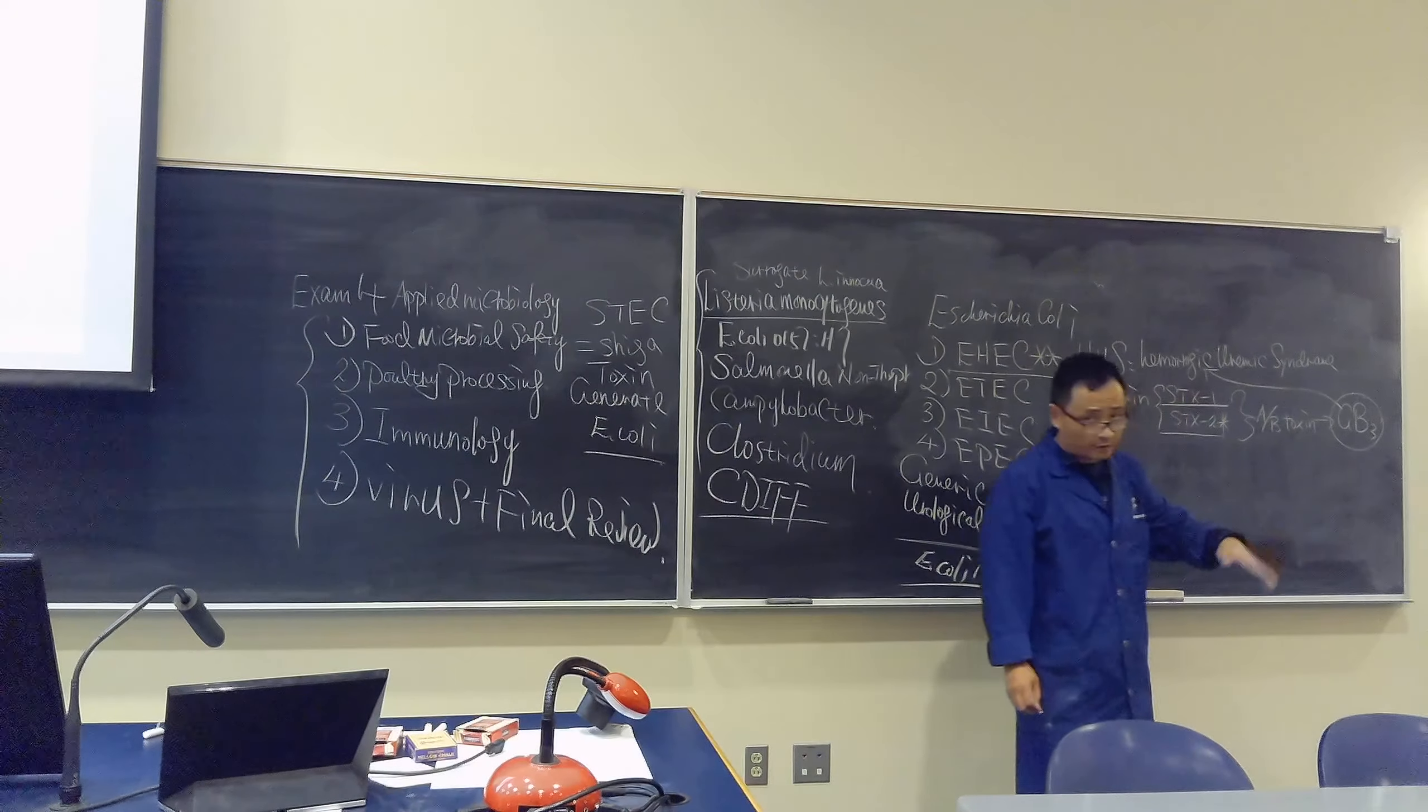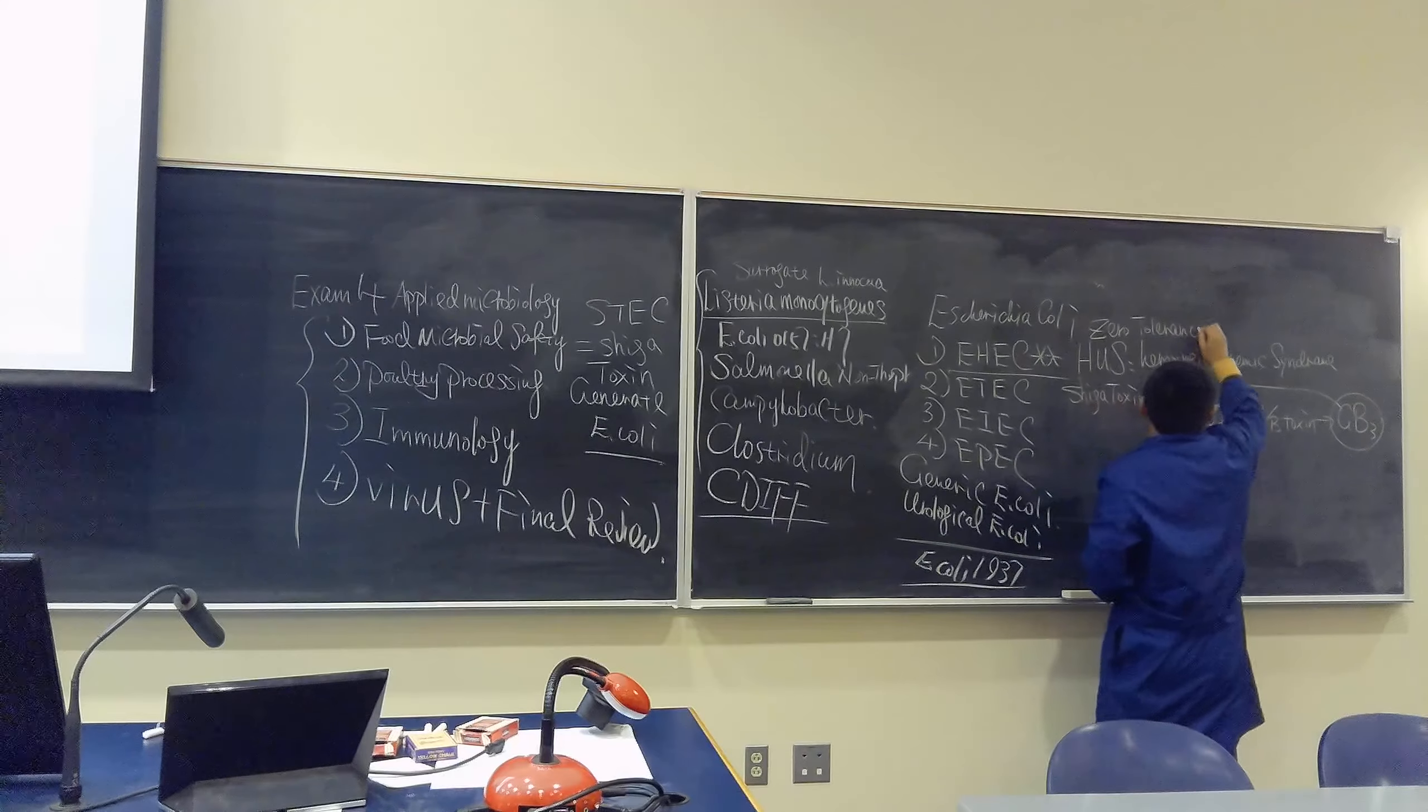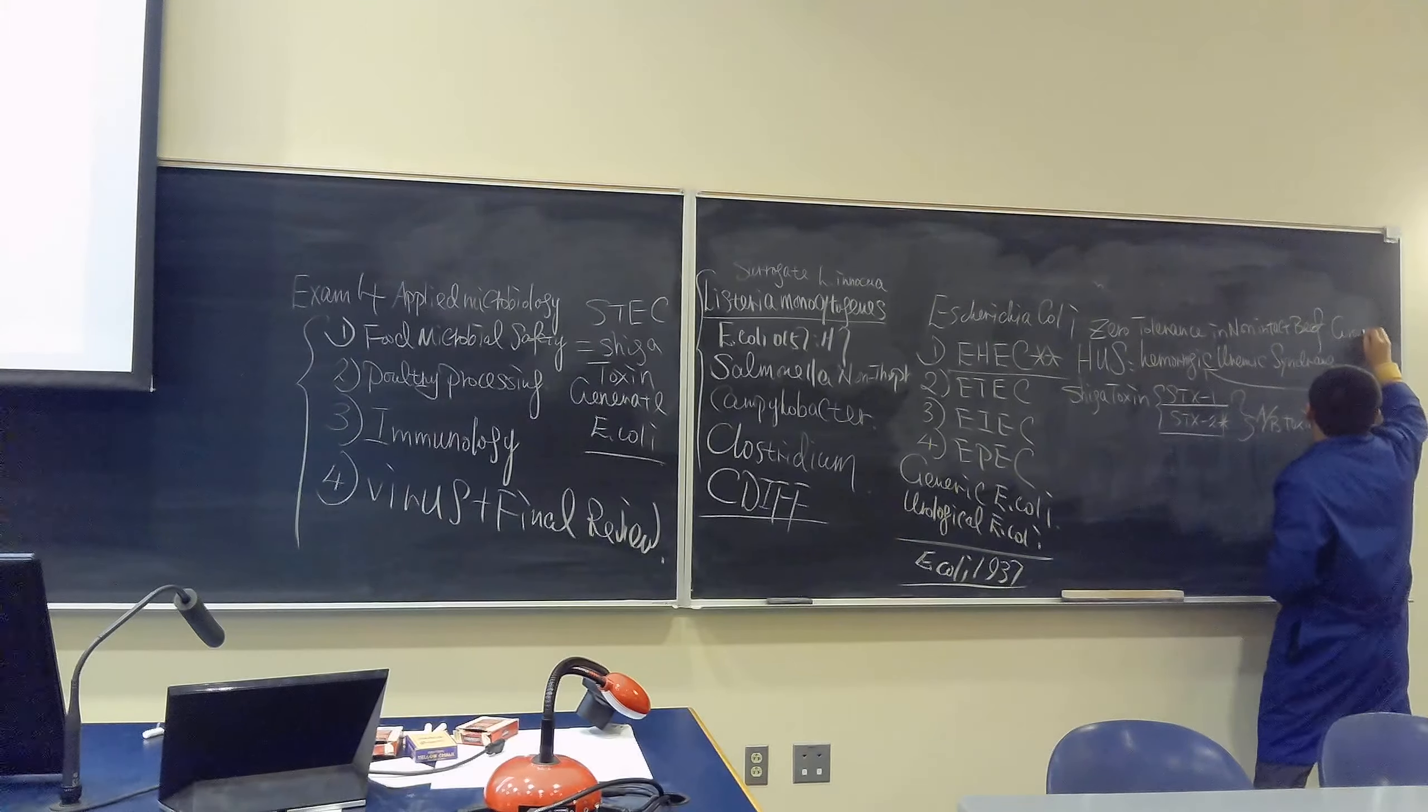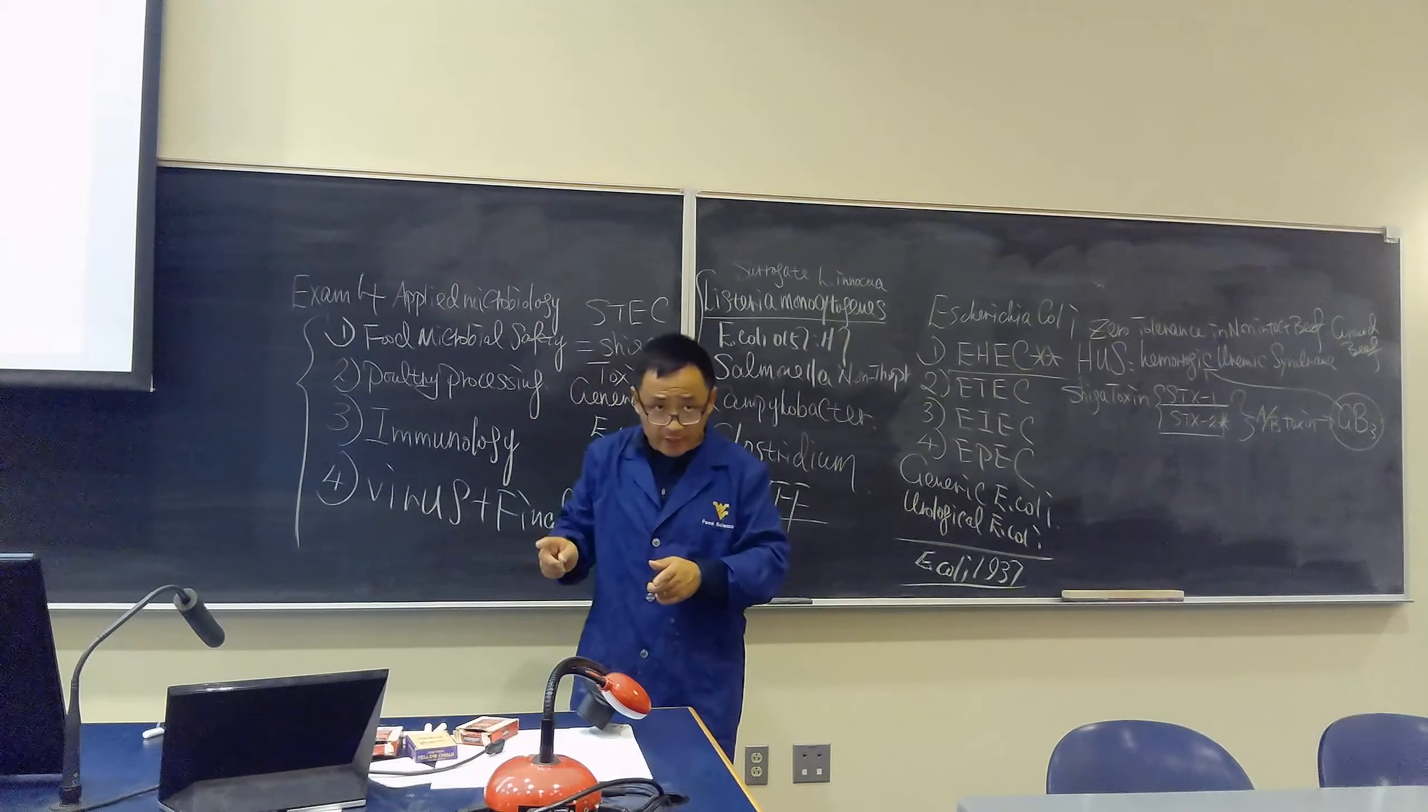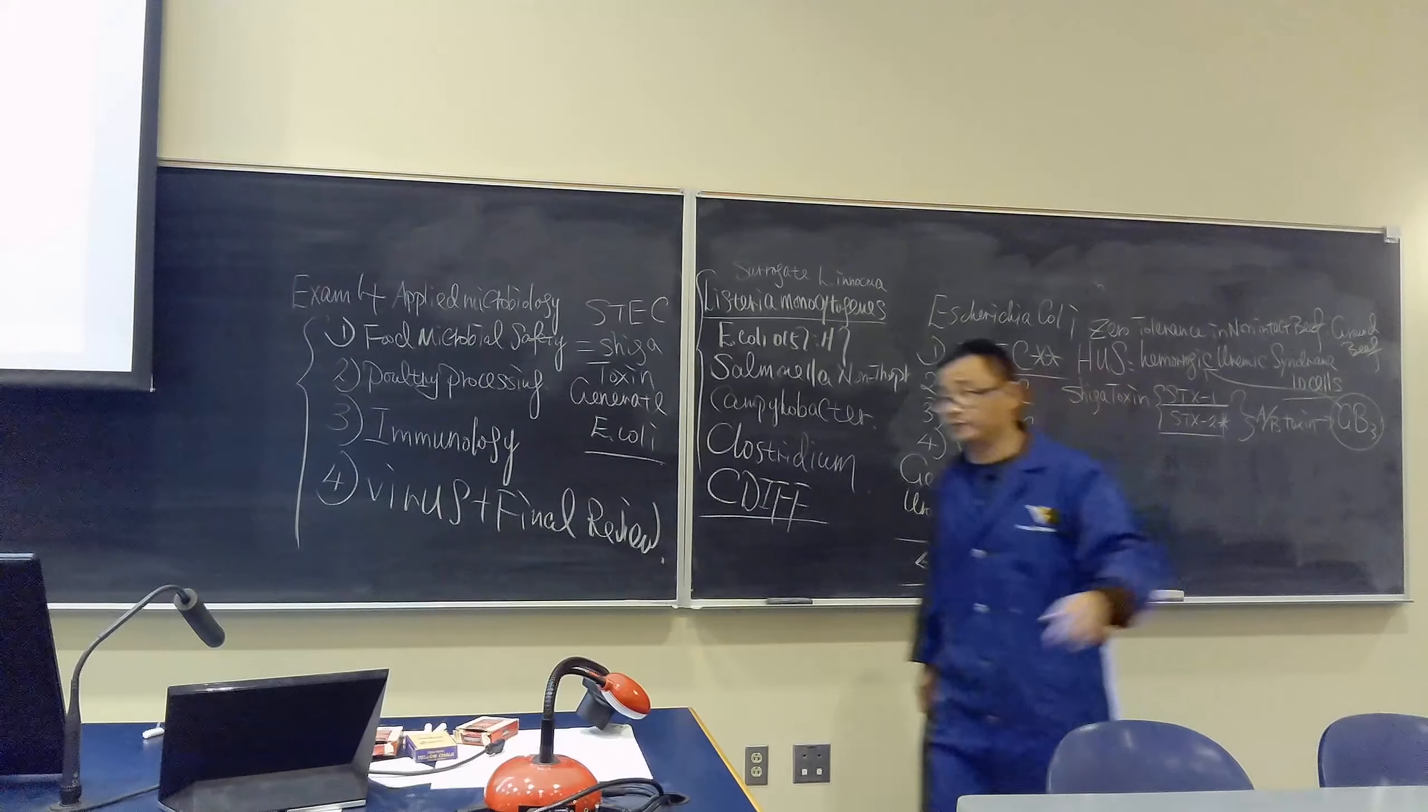Then they go back to do the microbiology analysis. So that's why the risk is for that. And this is a guy, is zero tolerance in non-intact beef, including ground beef, which means you're not allowed to have one single cell. And the death rate is very high, 5%, and the dose rate is also very low. 10 cells will cause a person dying. It's very, very risky.